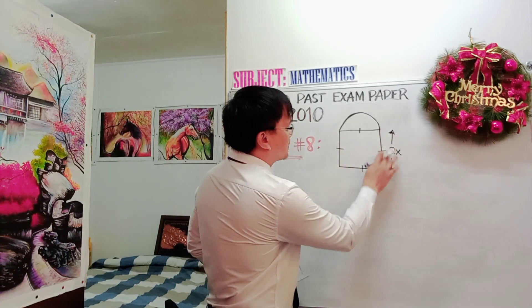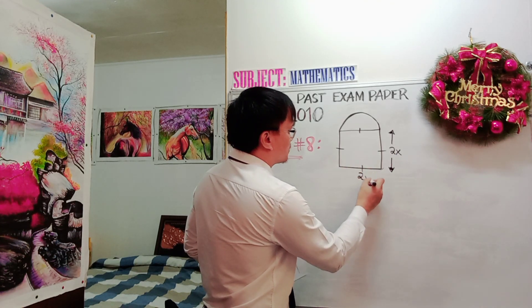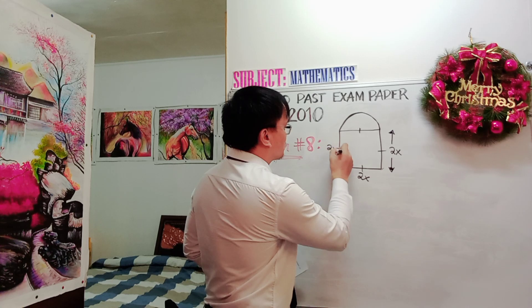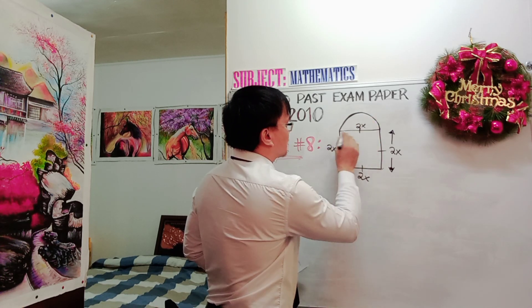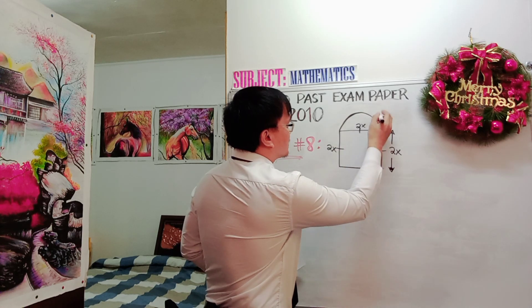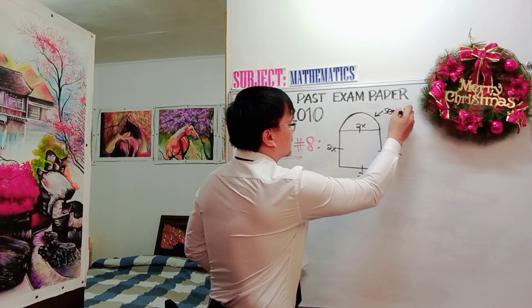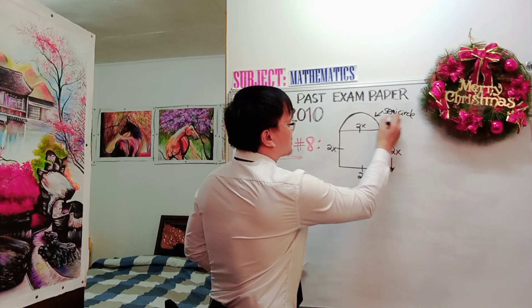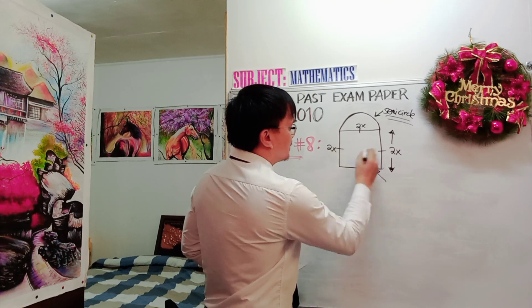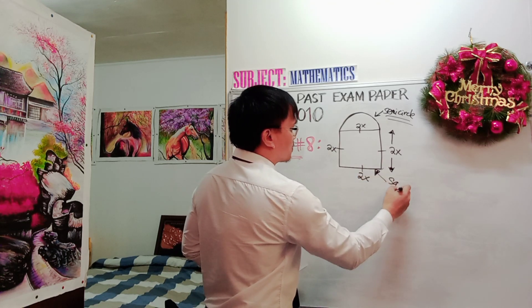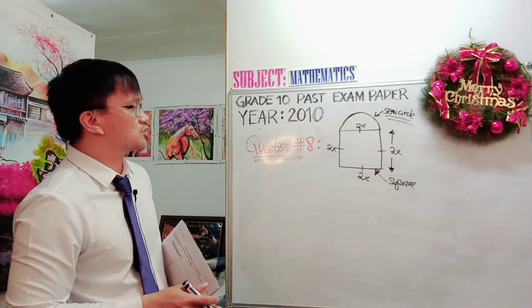In the national examination, it is always good that you redraw the diagram from the question paper into your rough paper. Take time, you have three hours to work out the problem. You have to redraw and label the diagram based on the given. If this one is 2x, then this is also 2x, this is also 2x, and this is also 2x. This is a semicircle, semicircle means half of the circle. This one is a square, the quadrilateral.